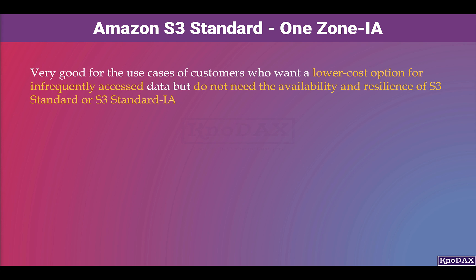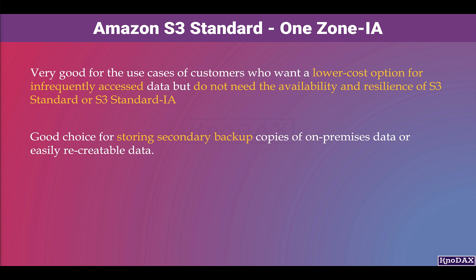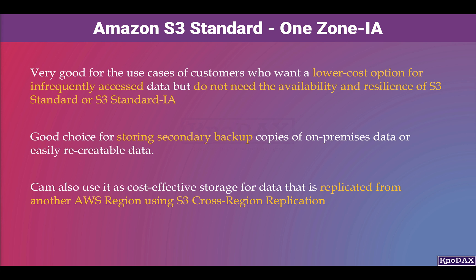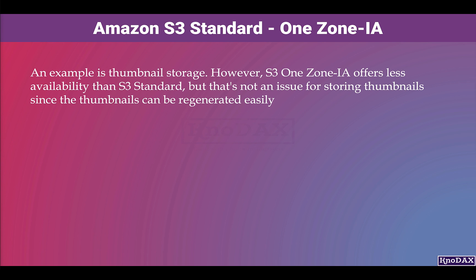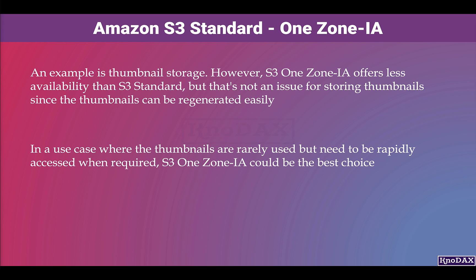S3 One Zone IA is good for customers who want a lower cost option for infrequently accessed data but do not need the availability and resilience of S3 Standard or S3 Standard IA. It is a good choice for storing secondary backup copies of on-premises data or easily recreatable data, and can be used for data replicated from another AWS region using S3 cross-region replication. An example is thumbnail storage, where thumbnails are rarely used but can be regenerated easily and need rapid access when required.